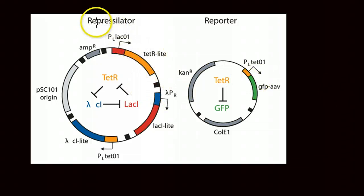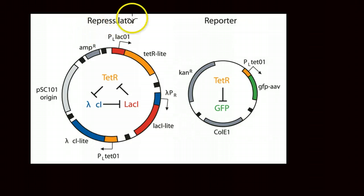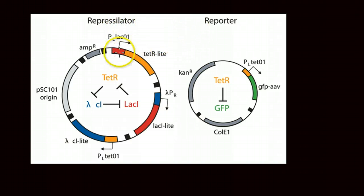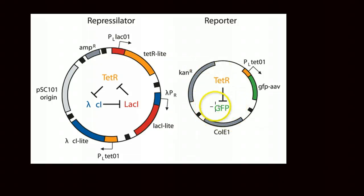One of the first examples that this could be done was with something called a repressilator. It sounds like some sort of terrible sci-fi weapon, but what it actually was is just an oscillating system in which green fluorescent protein was the output, basically telling you what state the system was in.